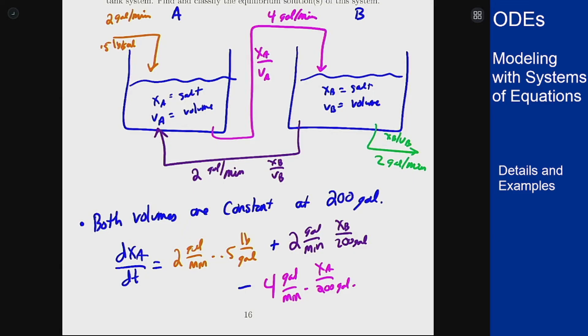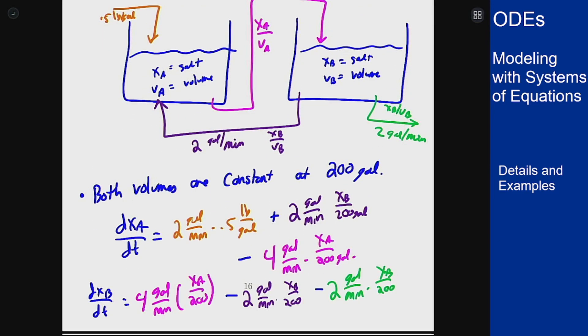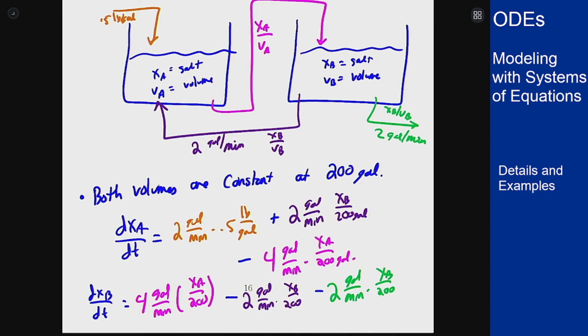I can do the same exact thing for tank B and get this equation. Again we have the pink stream which is now an inflow into tank B, and then the purple and the green that both flow out of tank B. We can now simplify these equations a little bit.